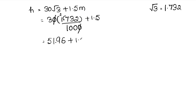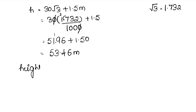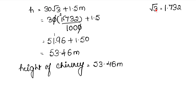So: 6 as it is, 9 + 5 = 14 carry 1, 1 + 1 = 2, 2 + 1 = 3, and 5 as it is, with the decimal point after 2 digits. Therefore, the height of the chimney is 53.46 meter. If √3 value is not given, you can take it as 1.732 — there will be no problem.